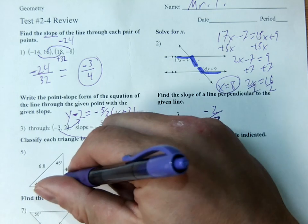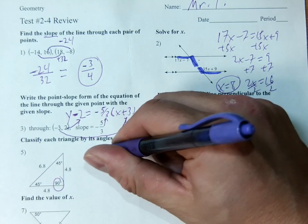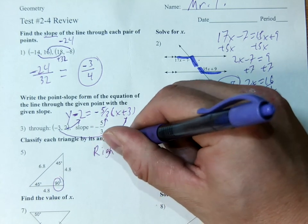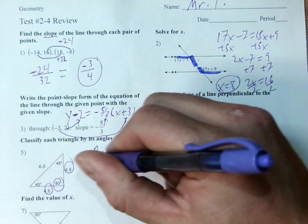This one, it's got a 90, that means it's right. And it's got two equal sides. That means it's isosceles.